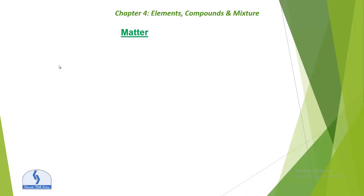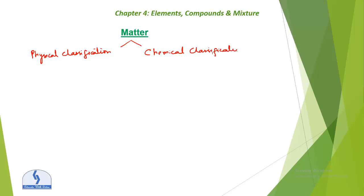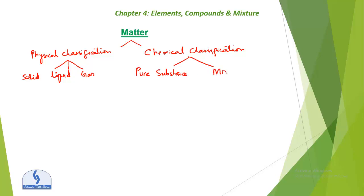First we discuss what is matter. Matter basically has two classifications: physical classification and chemical classification. In physical classification it is divided into three types — solid, liquid and gas. The chemical classification has two things: pure substance and impure substance, which we call mixture.